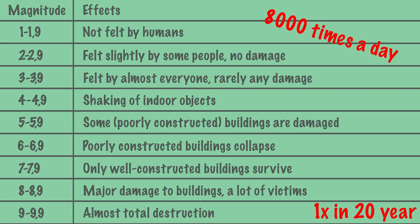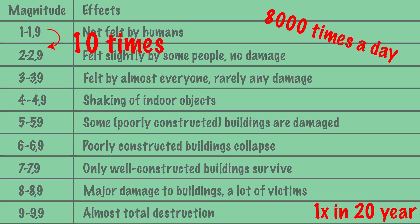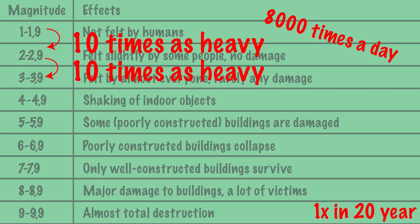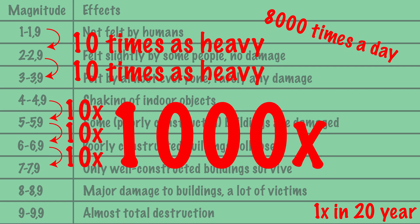The Richter scale is logarithmic. This means that an earthquake with a magnitude of 2 on the Richter scale is 10 times as heavy as an earthquake with a magnitude of 1. An earthquake with a magnitude of 3 is again 10 times as heavy. So an earthquake with a magnitude of 7 is 10 × 10 × 10 × 10, or 1,000 times as heavy as an earthquake with a magnitude of 4.